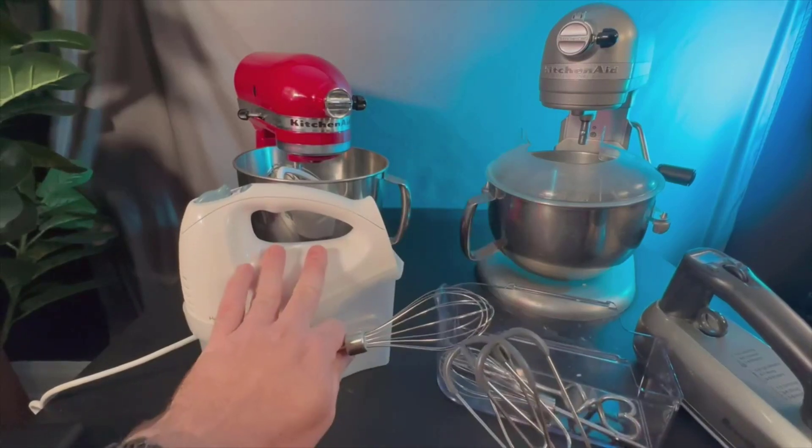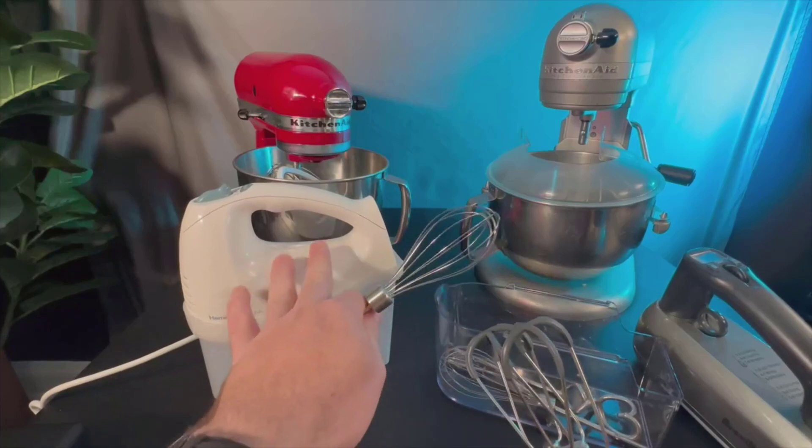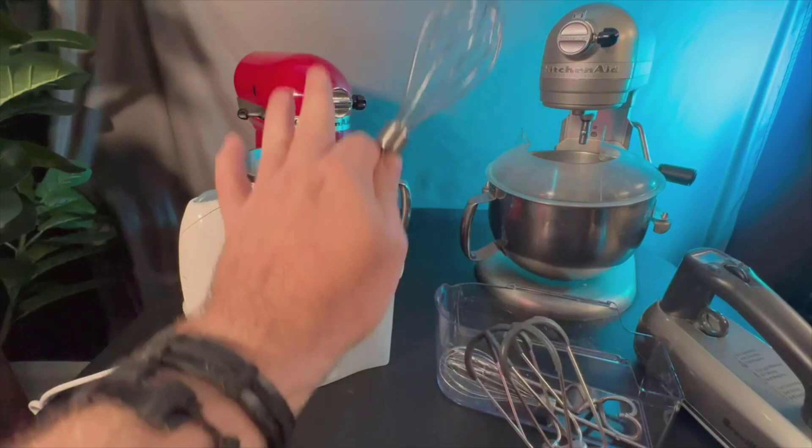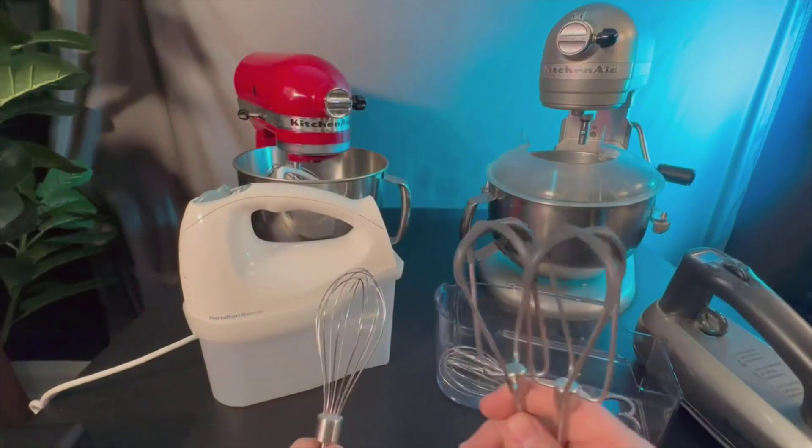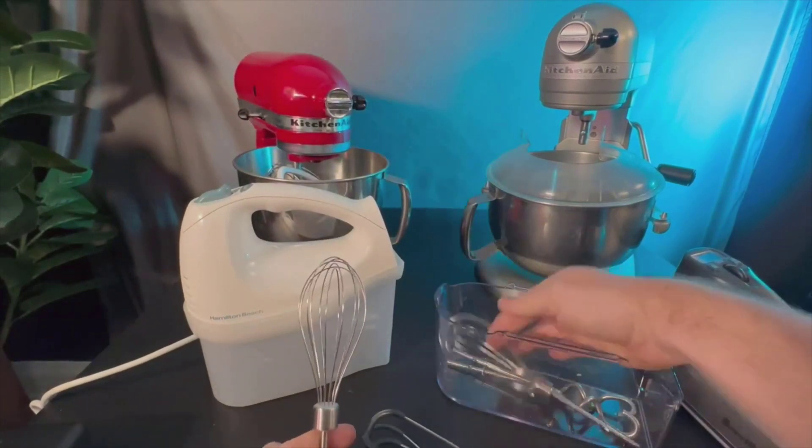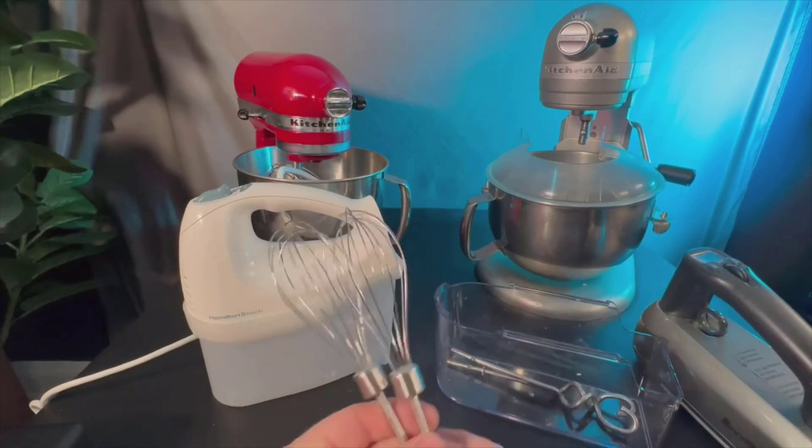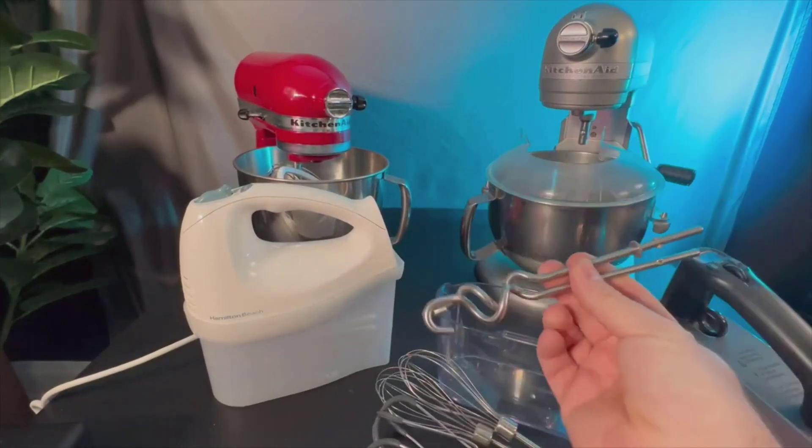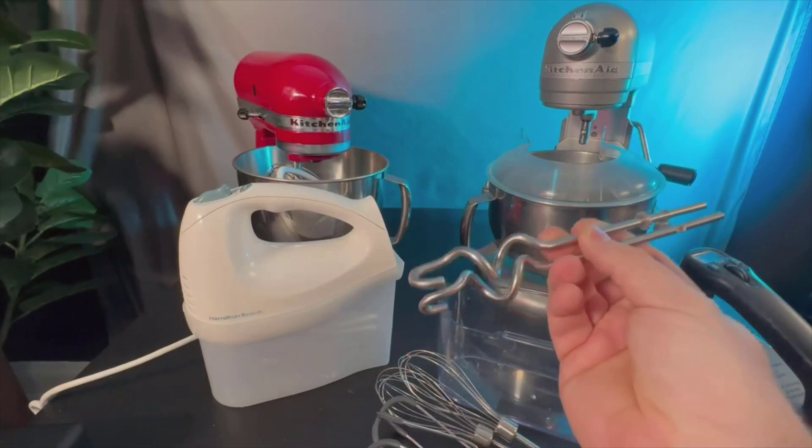This one's just got the metal ones. So you're not going to want to use that on anything that's got a non-stick surface or something. You're going to want to use something like this. It does come with two beaters for egg whites or something like that, and then we've got the two dough hooks. So this is going to help with dough.